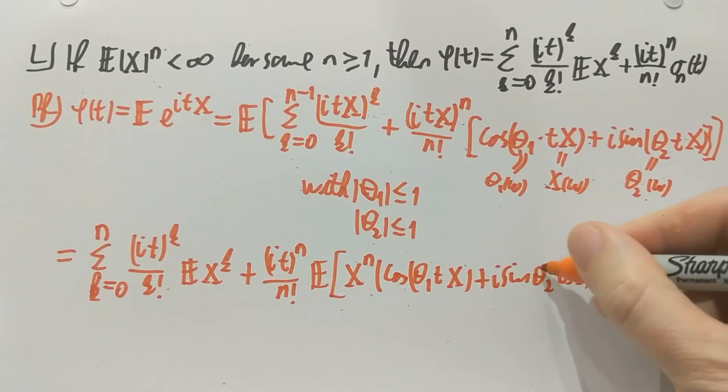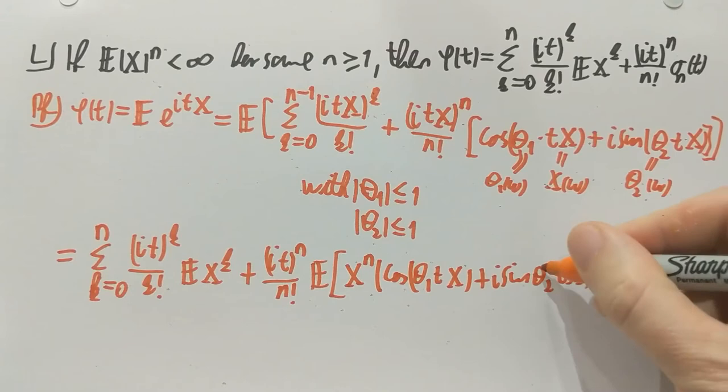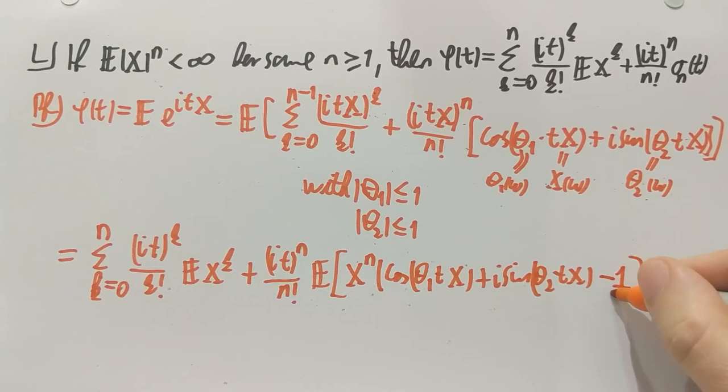And now what I'm going to do. I'm going to subtract a one here. And this minus one will make up for the fact that I did my summation up to n instead of n minus one which I had before. So if you look at the nth term. The nth term here is it to the n, n factorial E of x n. It to the n, n factorial E of x n subtracted. So this minus one makes up for the fact that that sum goes up to n instead of n minus one as I had before.